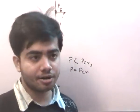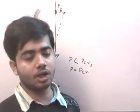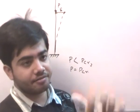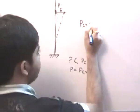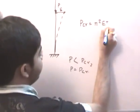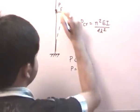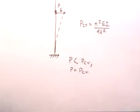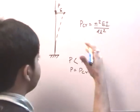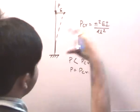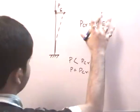At P greater than PCR, if we apply a load greater than the critical load, the column bends indefinitely. We found that PCR equals π²EI divided by 4L², where EI is the flexural rigidity of the column, for a fixed-free type of end support. This is the Euler critical load, and if a force greater than this is applied, the column will bend indefinitely.